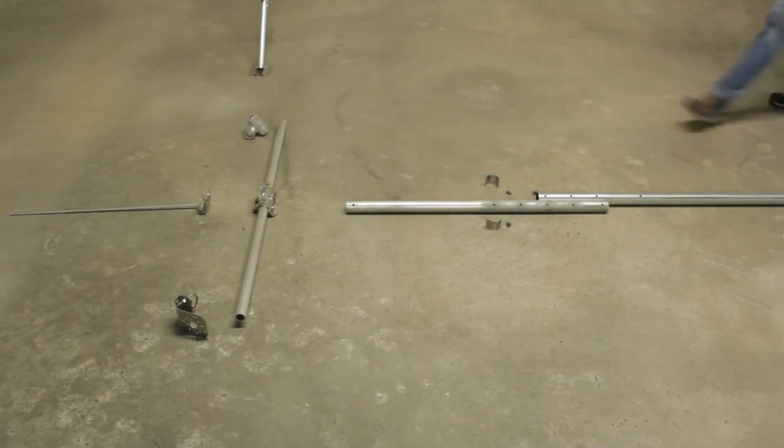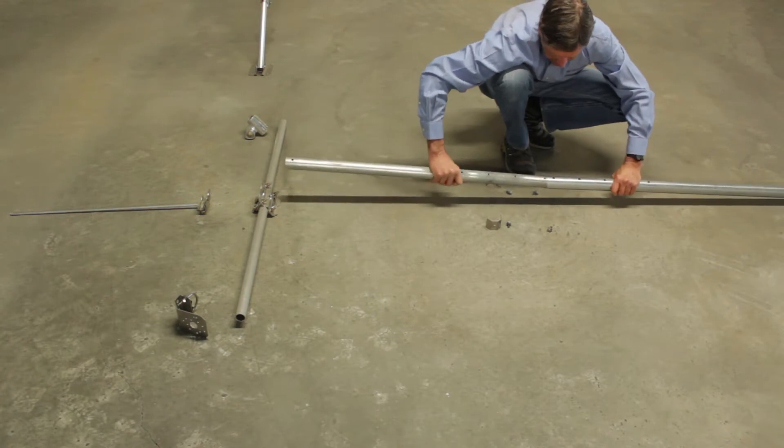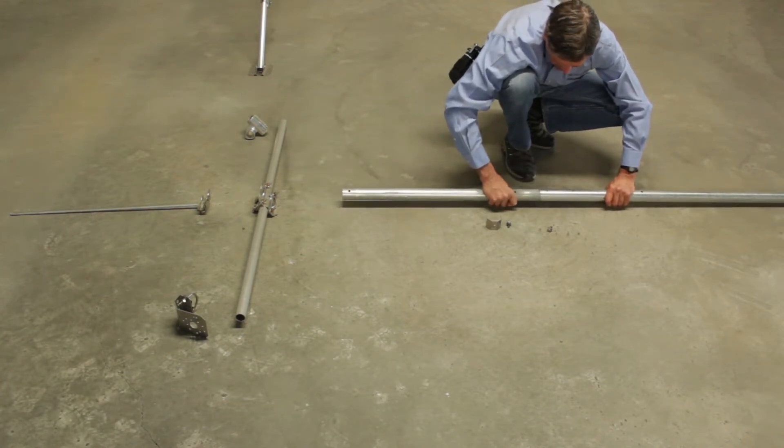In this example, the mast and crossarm are being assembled for a 3 meter tripod. Insert the mast extension into the mast and secure it with 4 bolts.